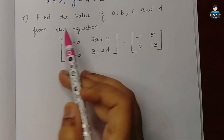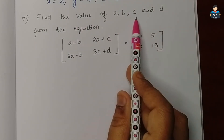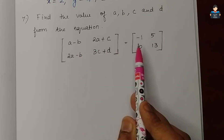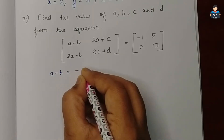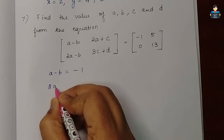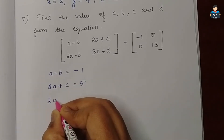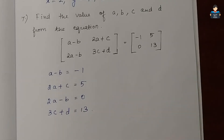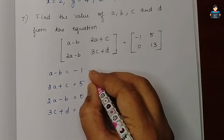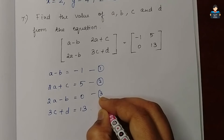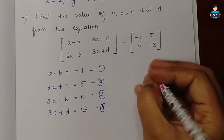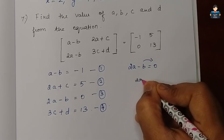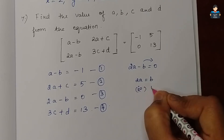Question 7: find the values of a, b, c, and d from the given matrix equation. Since the two matrices are equal, the corresponding elements give us: a minus b equals minus 1, 2a plus c equals 5, 2a minus b equals 0, and 3c plus d equals 13. From equation 3: 2a minus b equals 0, so b equals 2a.